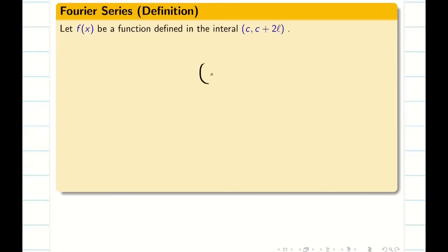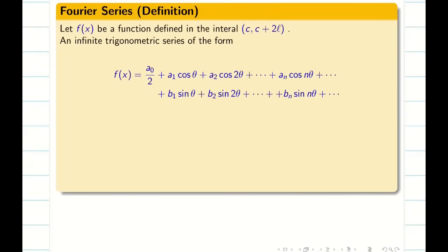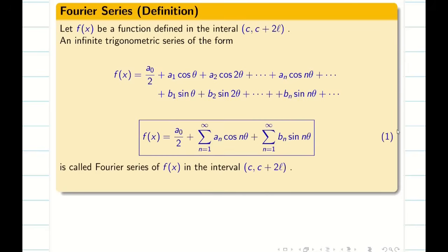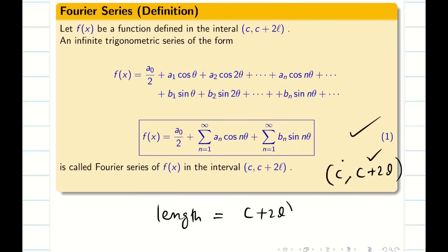The definition of Fourier series in general in the interval c to c plus 2l can be expressed as an infinite trigonometric series. This equation 1 is called the Fourier series for the function f of x at the interval c comma c plus 2l. If you want to find the length of the interval, you subtract the upper limit by the lower limit: c plus 2l minus c. So the length is 2l, and the half length is l.